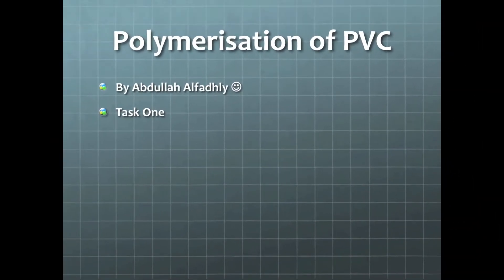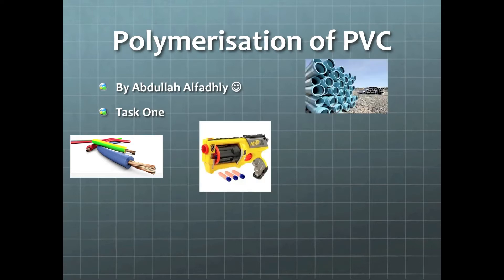The uses of polyvinyl chloride consist of the production of many plastics which compensate for the production of insulating wires, the production of toys, pipes and even clothing.